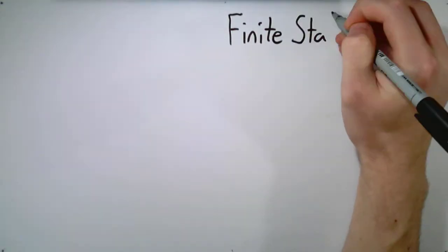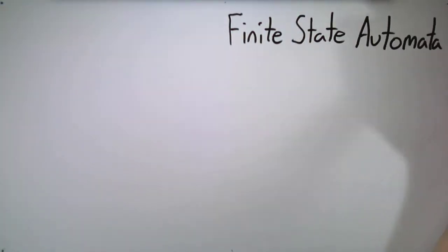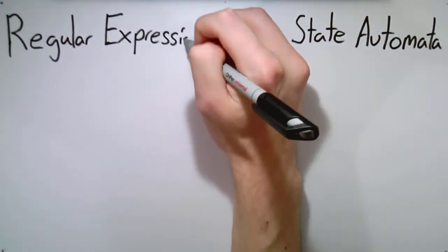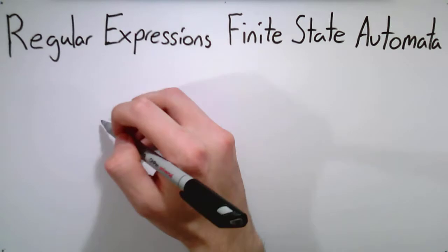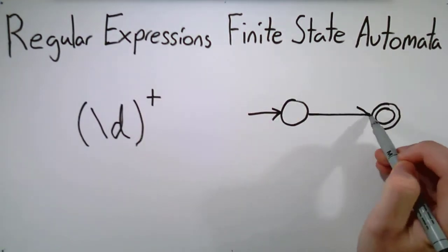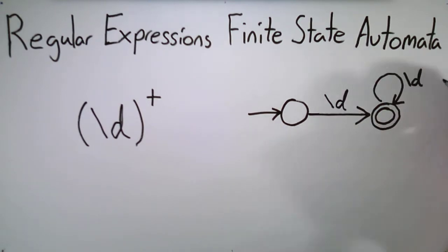Finite state automata, explained in an earlier series, describe exactly the same languages as regular expressions. Every regular expression can be converted to a finite state automaton, and every finite state automaton can be expressed as a regular expression.